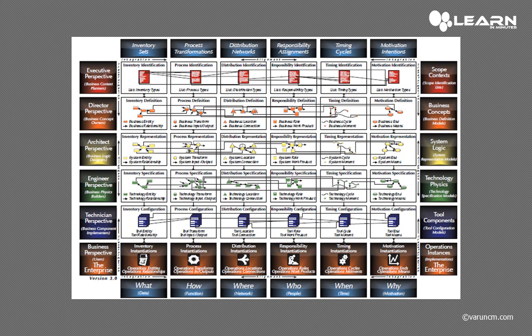This is a sample SACMAN 3.0 framework where you can see all the columns represented by the W5H terms — what, how, where, who, when, and why — shown at the bottom. Similarly, all the row concepts are represented on the right: scope context, business concepts, system logic, technology physics, tool components, and operation instances.